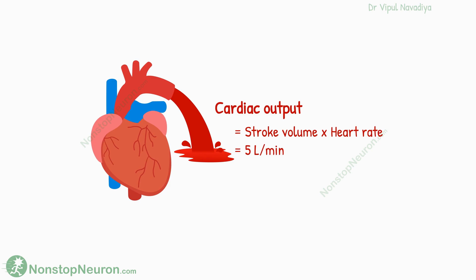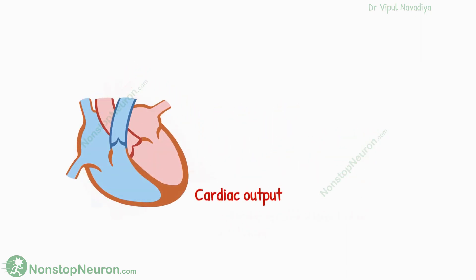But depending on the body's requirement, it can be adjusted. How is this adjustment done? The simple answer is by regulating venous return. Venous return is the most important parameter determining cardiac output.